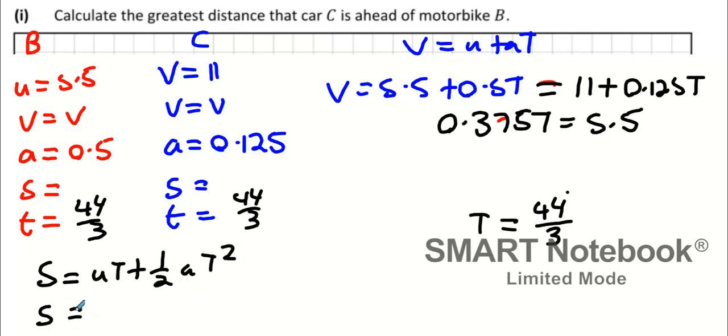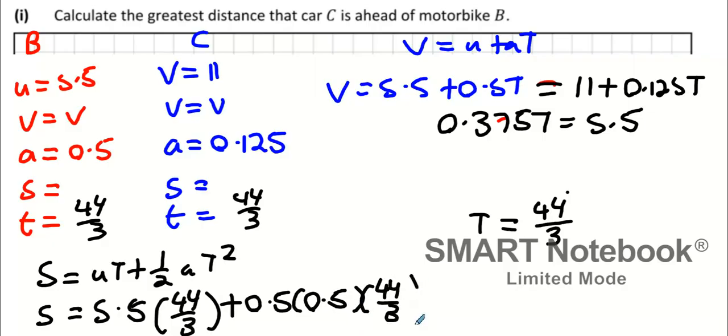The first S value is going to be 5.5 times 44 over 3, plus a half times 0.5 which is a quarter, and T squared is 44 over 3 squared. I got 1210 divided by 9.